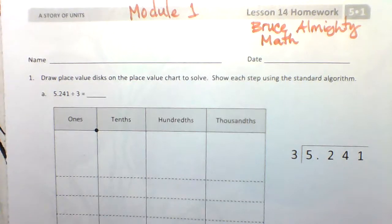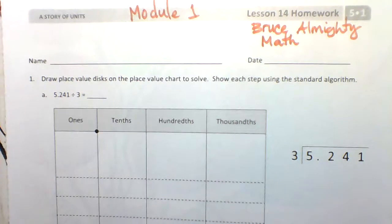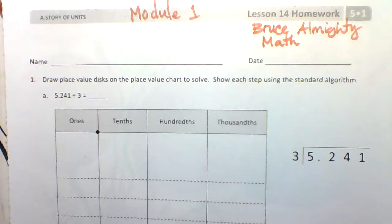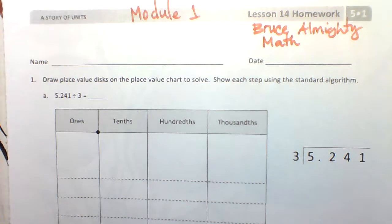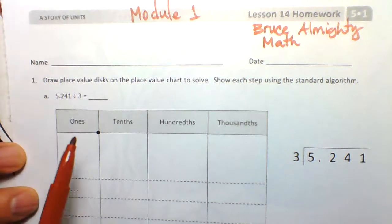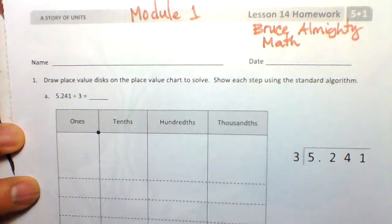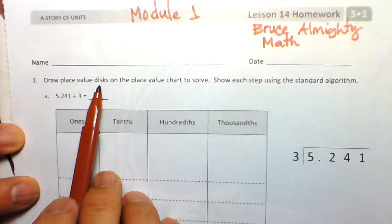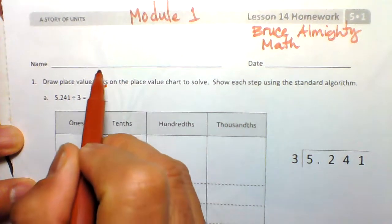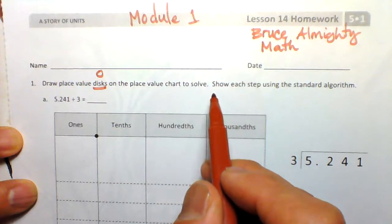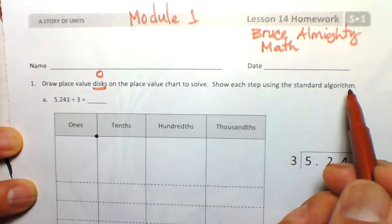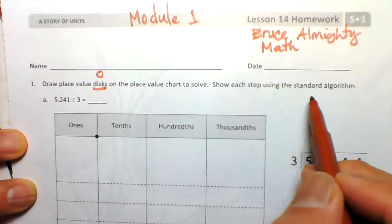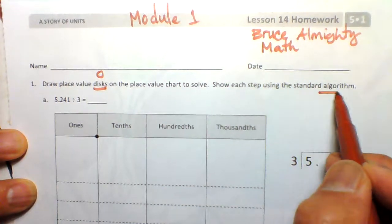Hello my friends, welcome back to my channel. This is your coach Mr. Magnifico. We are now looking at lesson 14 module 1 from the Eureka program. Tonight we have Bruce Almighty and this is our task: draw place value disks — little circles on the place value chart — to solve each step using the standard algorithm.